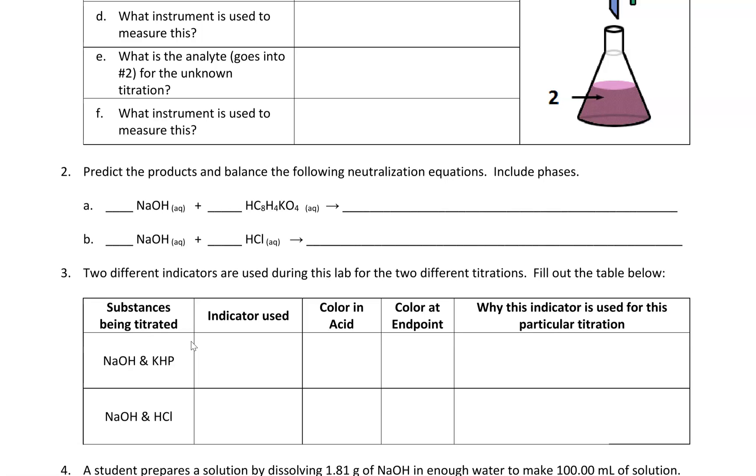If you've read through the lab already, you probably came across the molecule or chemical called KHP. A lot of new chemists think that is potassium, hydrogen, and phosphorus bonded together. That is not what it is. That is potassium phthalate, which is this compound right here. This is KHP.